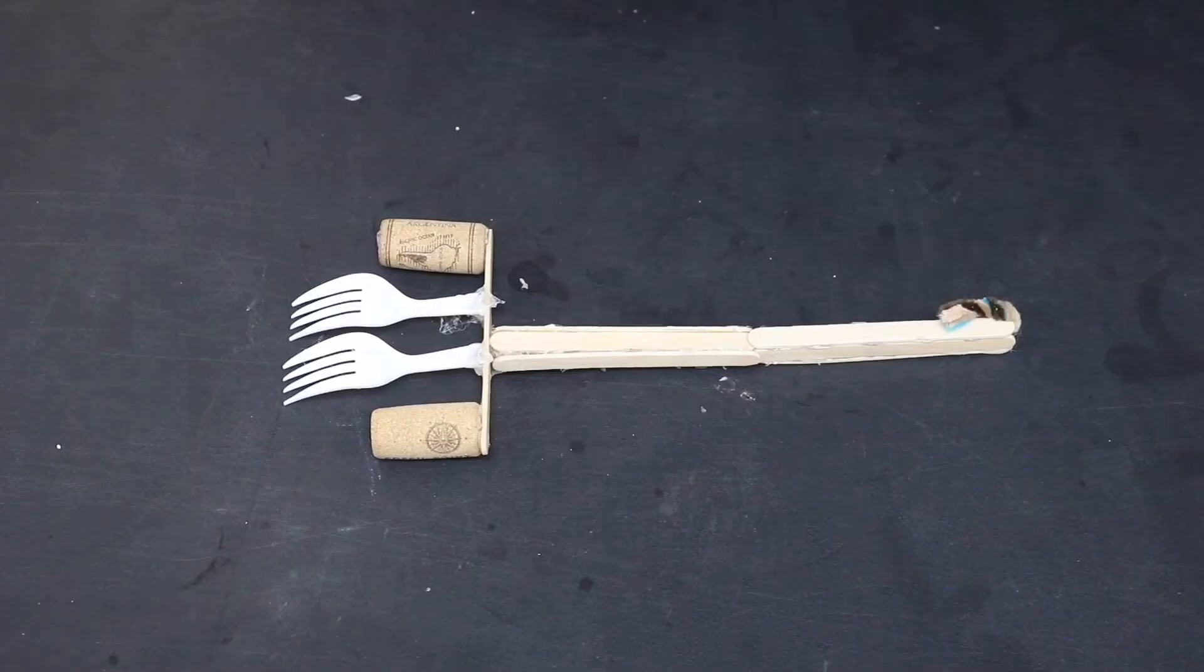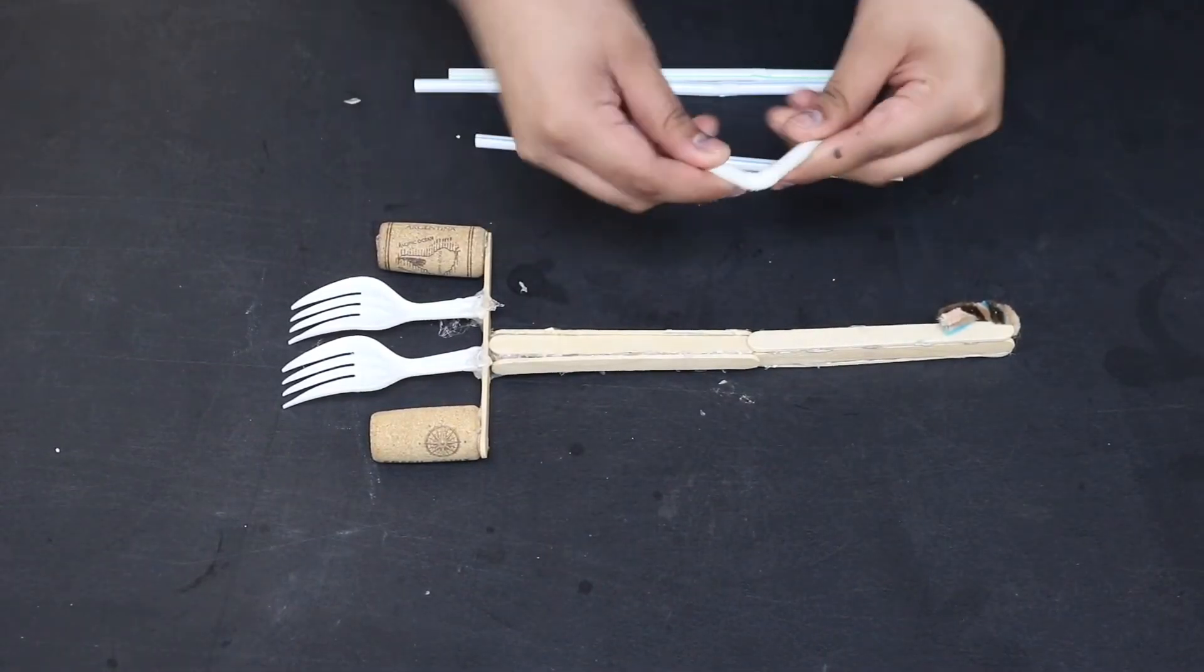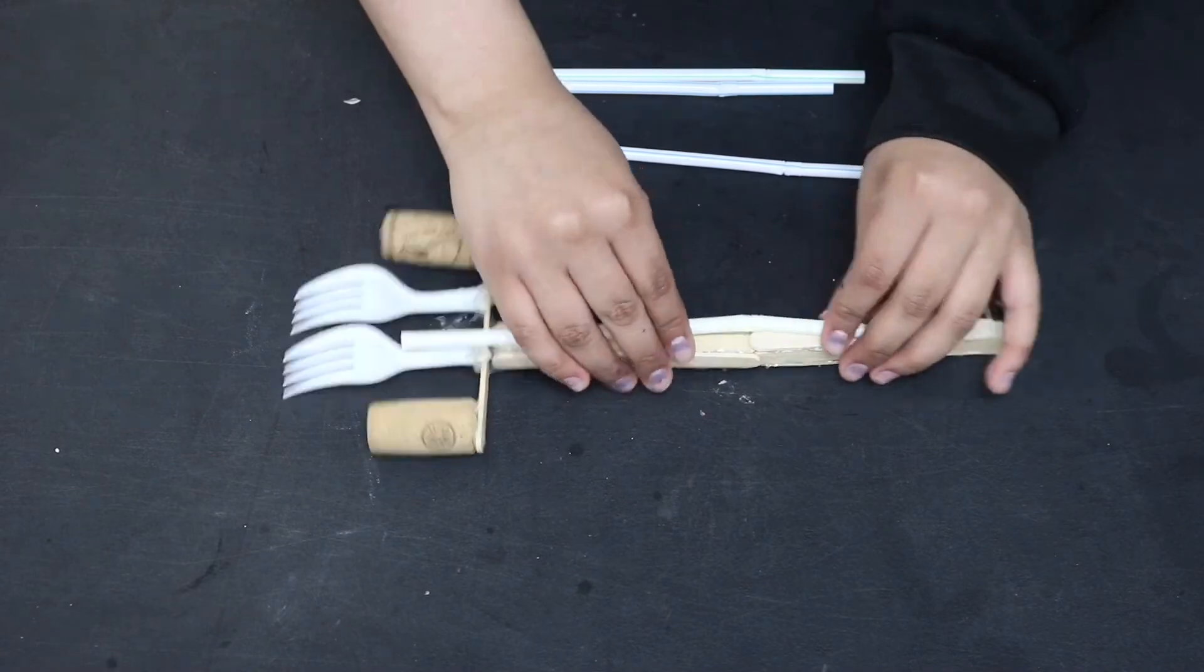To finish off my backscratcher and to make sure that I will be able to bend it to different angles, I will be attaching straws to my boxes.